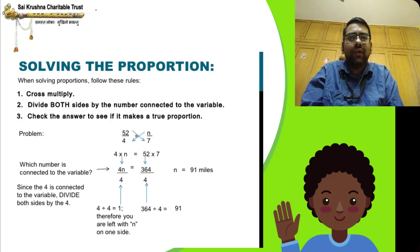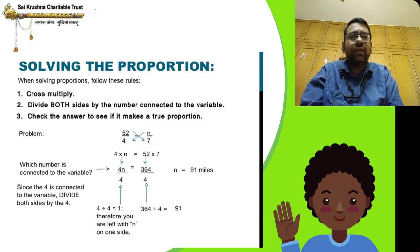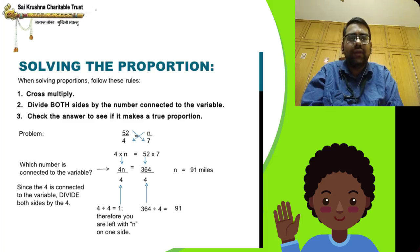Next example: 52/4 = n/7. We need to find the value of n. We will do cross multiplication: numerator 1 into denominator 2 equals denominator 1 into numerator 2, which gives 4n = 52 into 7. 52 into 7 is 364. We will divide both sides by 4.